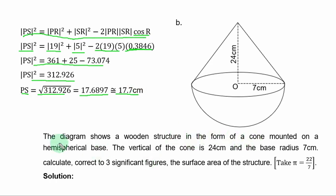The diagram shows a wooden structure in the form of a cone mounted on a hemispherical base. The vertical height of the cone is 24 cm and the base radius is 7 cm. Calculate correct to 3 significant figures the surface area of the structure.